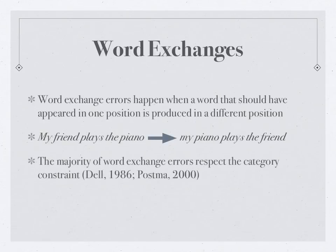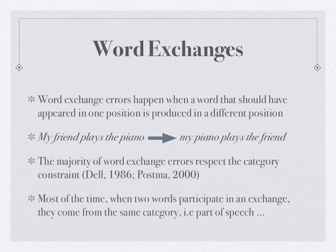The majority of word exchange errors respect the category constraint — another example of how speech errors are organized and respect patterns, rules, and constraints. As postulated by Dell (1986) and Postma (2000), most of the time when two words participate in an exchange, the words that are exchanged come from the same grammatical category — the same part of speech. So we exchange nouns with nouns, verbs with verbs, or adjectives with adjectives. We cannot exchange verbs with nouns, and so on.